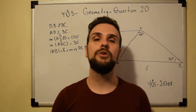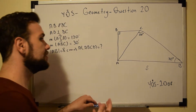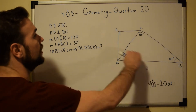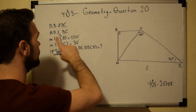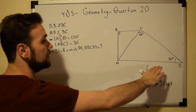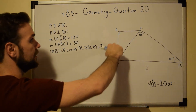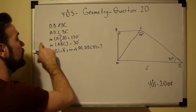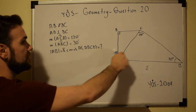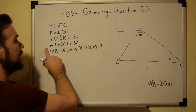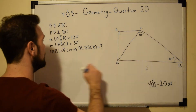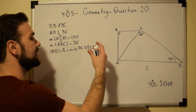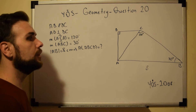Greetings everyone and welcome to question number 20. In this question, as you can see, we are dealing with a trapezoid. We have AB parallel to DC, AD perpendicular to DC creating an 80-degree angle, angle ACB equal to 120 degrees, angle ABC equal to 30 degrees, and side AB equal to 8. We are asked for the area of this trapezoid.